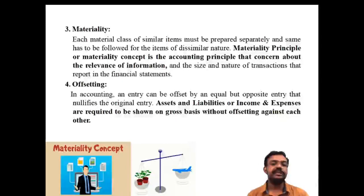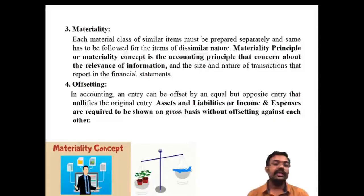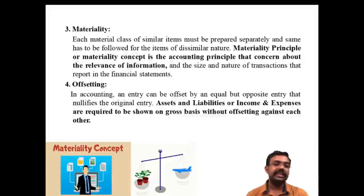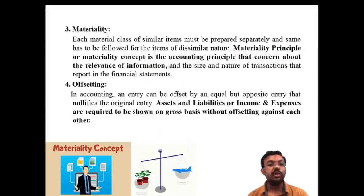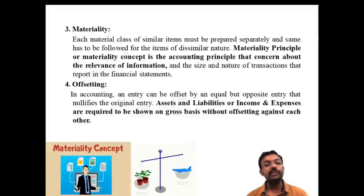The fourth concept is offsetting. Assets and liabilities, and income and expenses, are required to be shown on a gross basis without offsetting against each other. While a certain accounting entry can be offset by an equal but opposite entry — meaning a debit and credit transaction — certain liabilities, income, and expenses are required to be shown on a gross basis without offsetting. They must be kept separate and not combined into an offsetting entry.